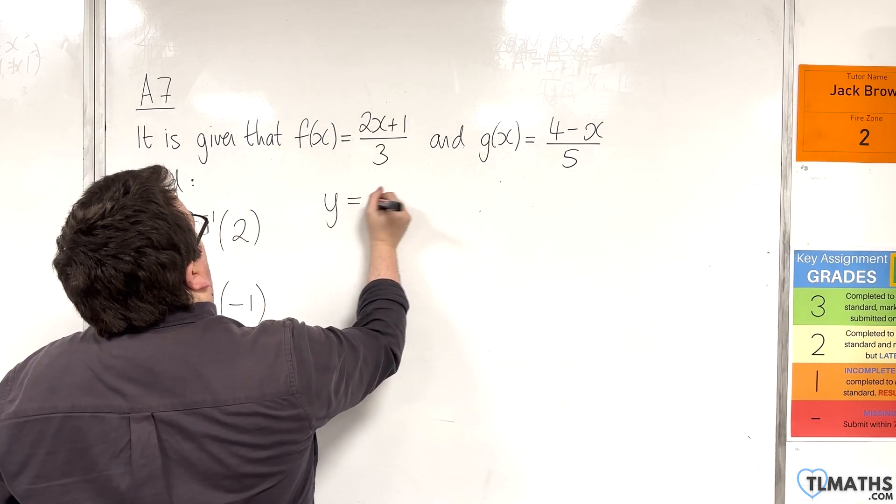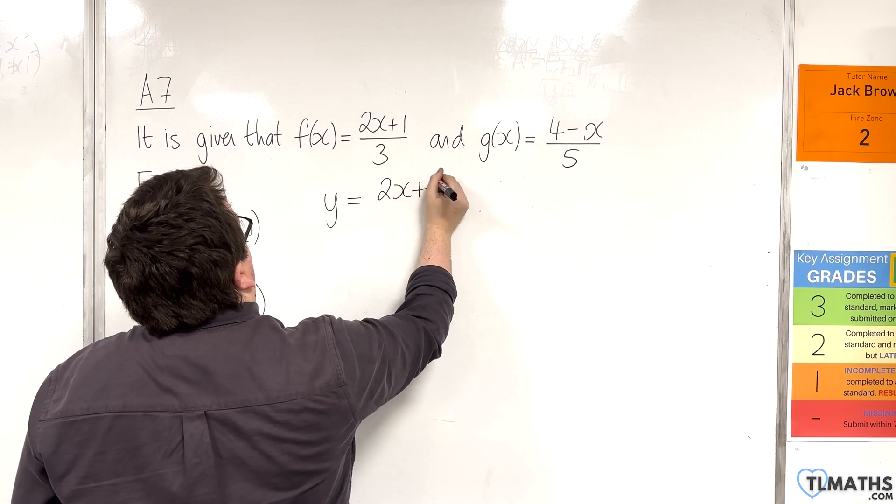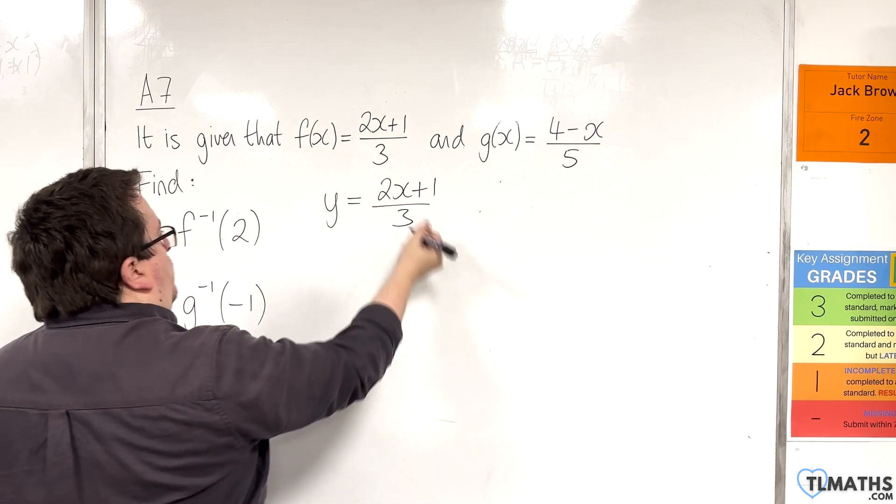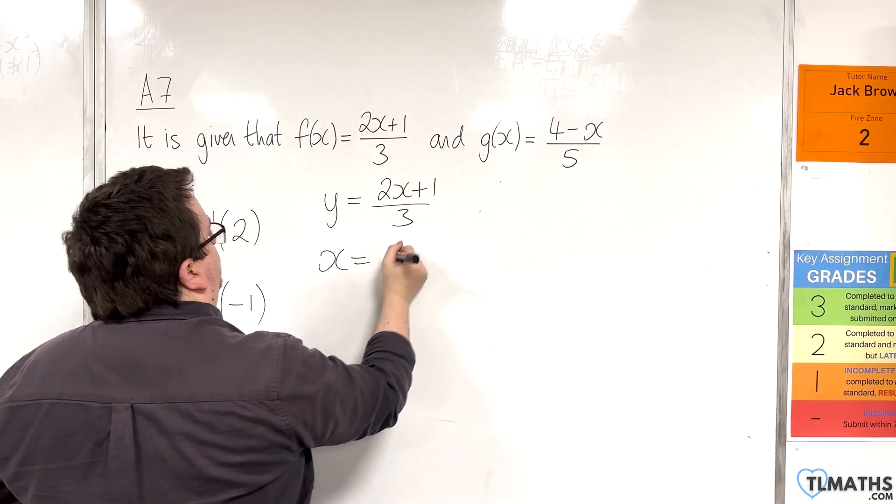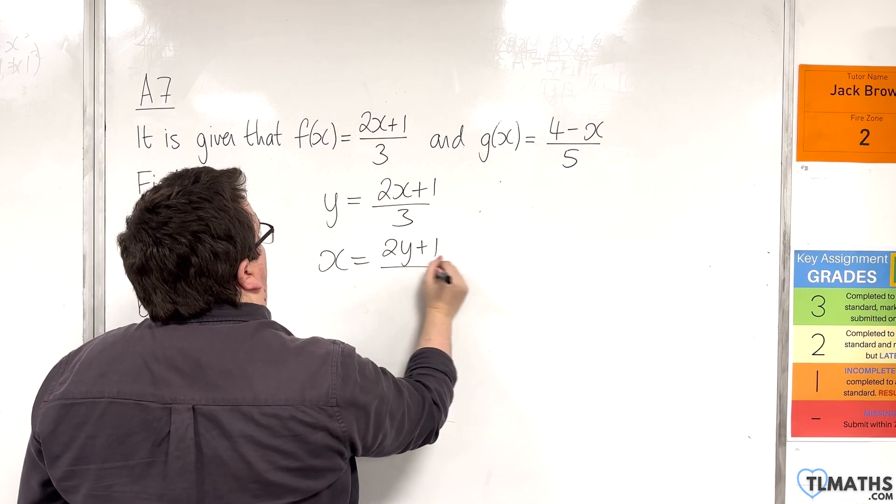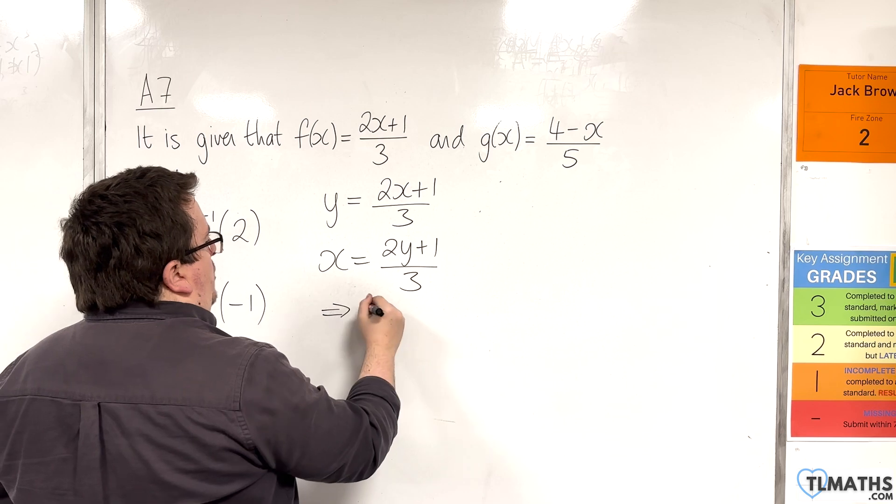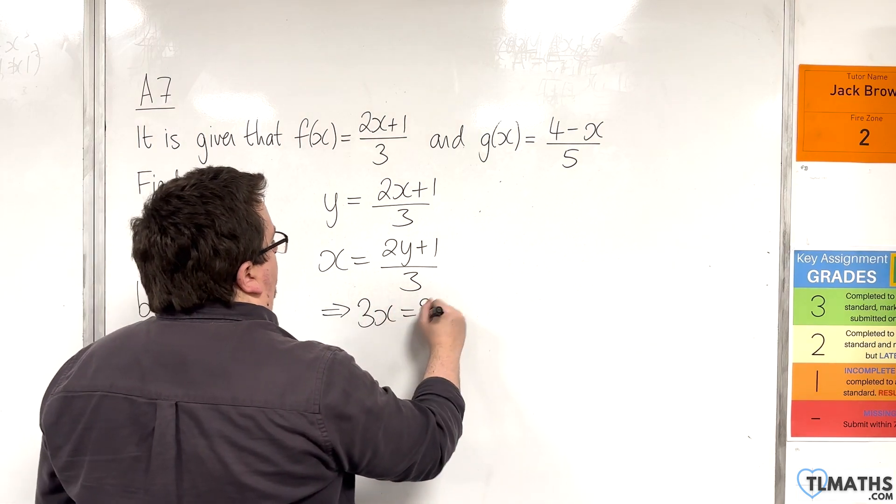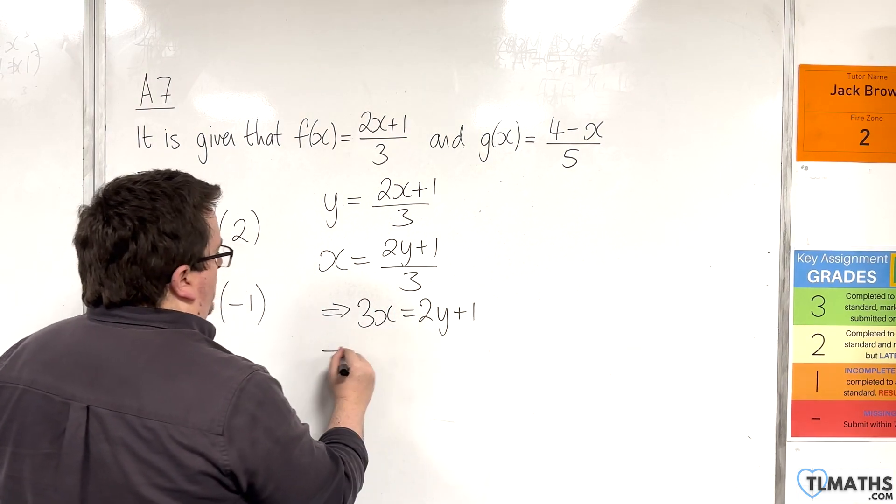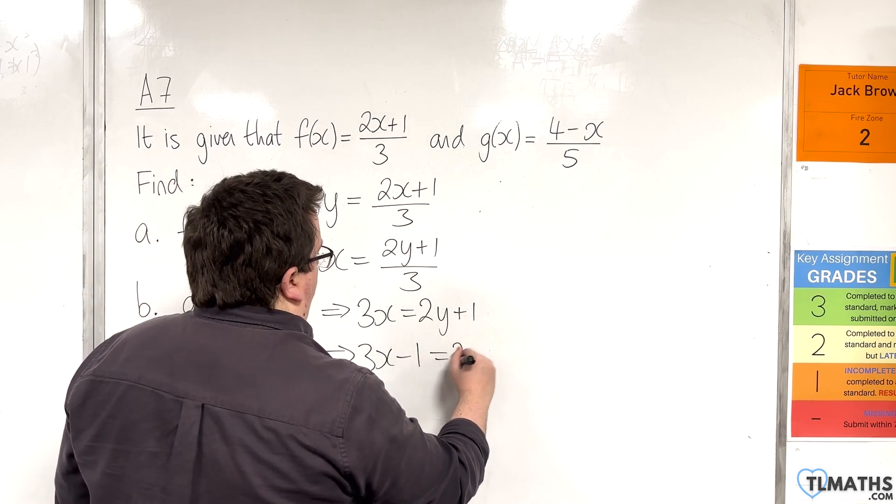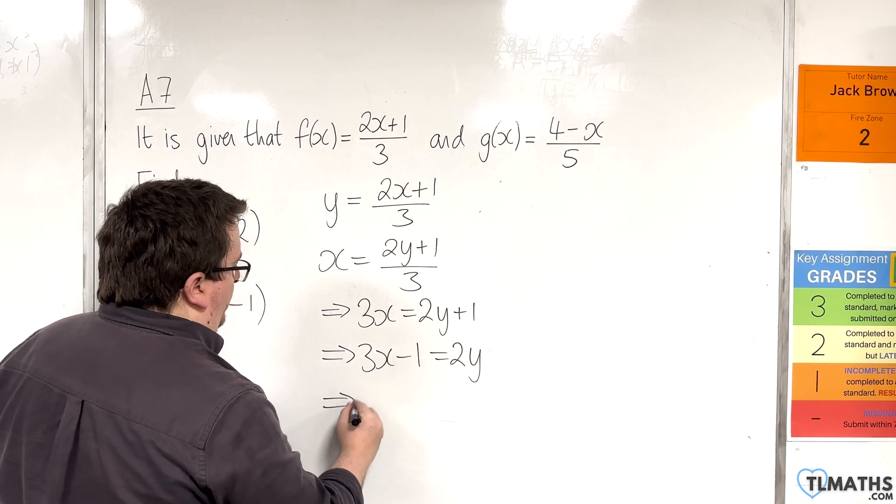So, replace the f of x with y, swap the x's and y's, and then rearrange this to get y equals. So, multiply through by 3 first, subtract 1 from both sides, and then divide both sides by 2.